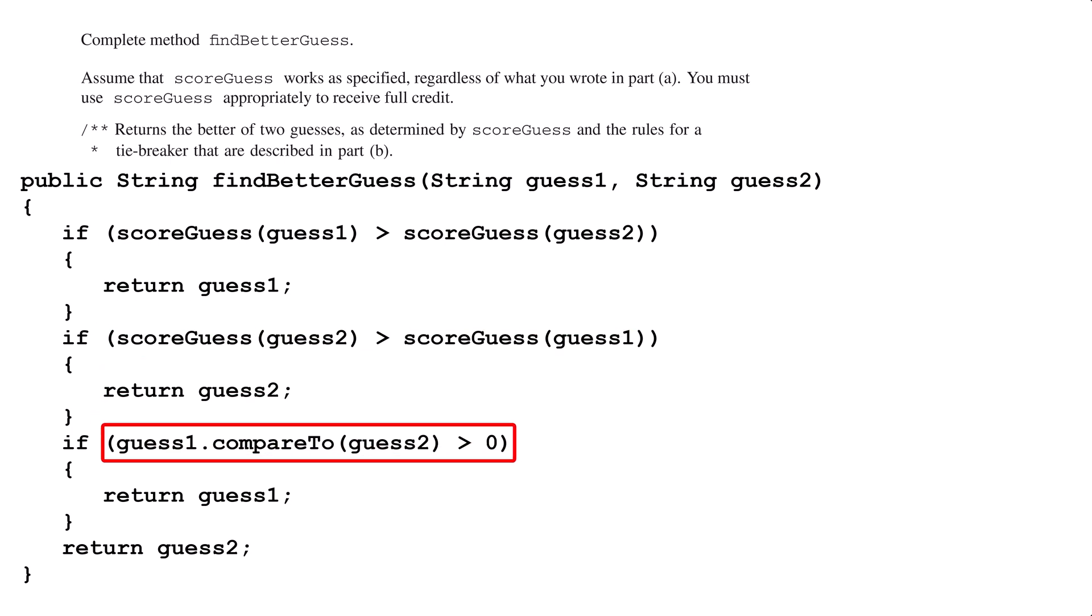If the scores of the two guesses are the same, we need to use the compare2 method to break the tie by figuring out which one comes second alphabetically. The strings compare2 method will calculate the difference between the numerical values of guess1 and guess2. If guess1 has a higher numerical value than guess2, it will return a number greater than zero. If guess2 has a higher numerical value than guess1, it will return a number less than zero. If guess1 and guess2 are the same, it will return zero, but the preconditions guarantee us the strings won't be the same.